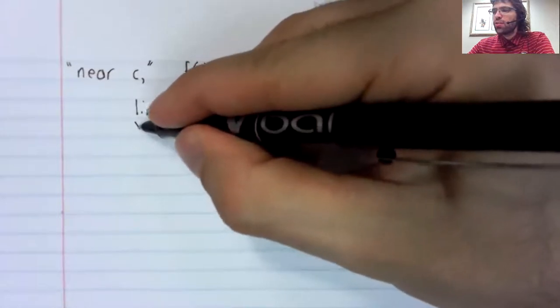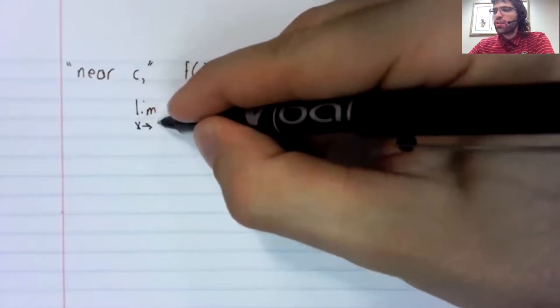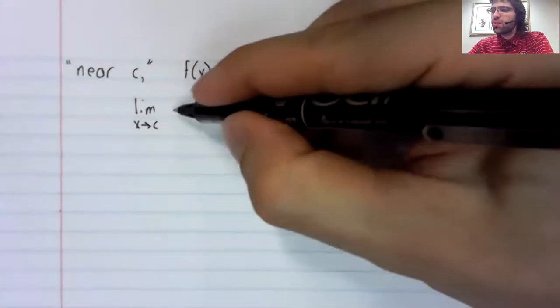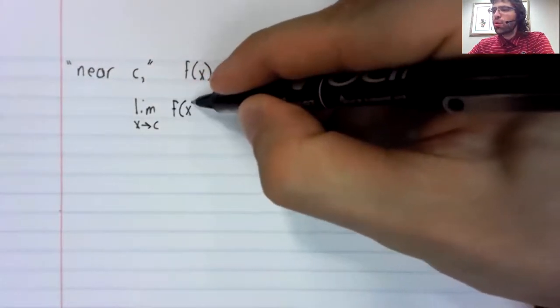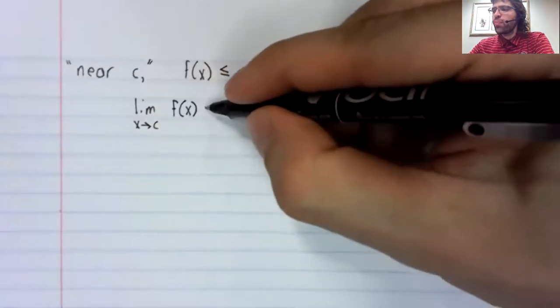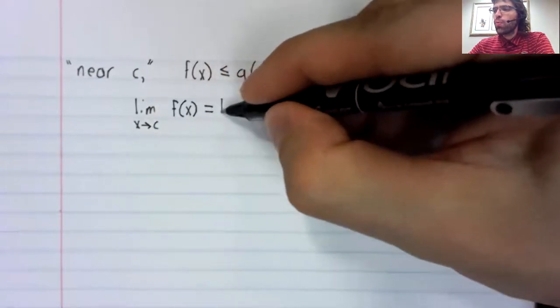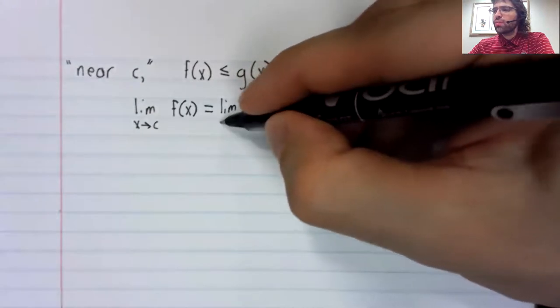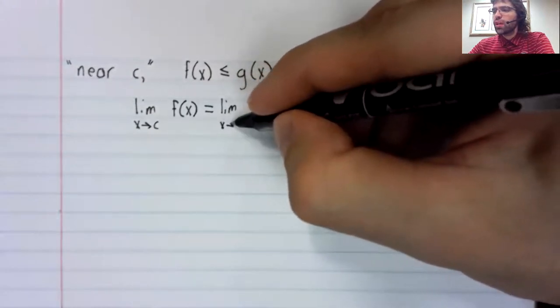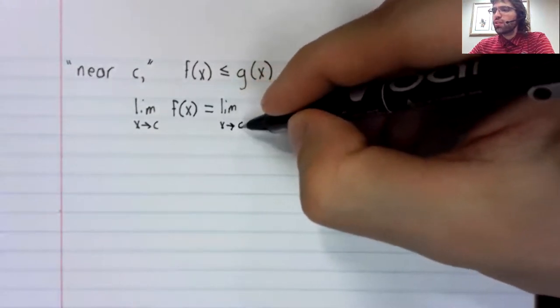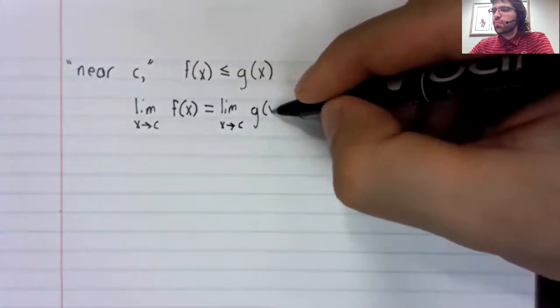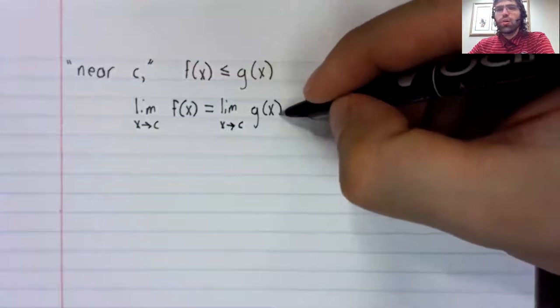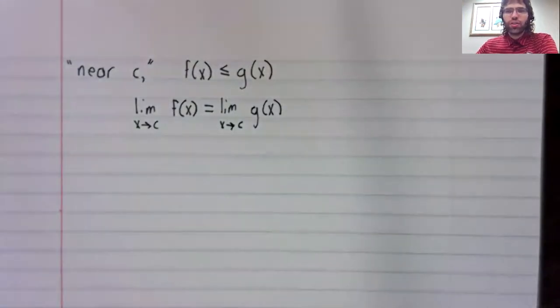And the limit as X approaches C of the smaller function equals the limit as X approaches C of the bigger function.